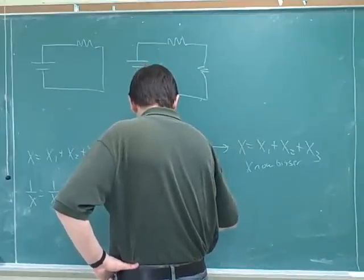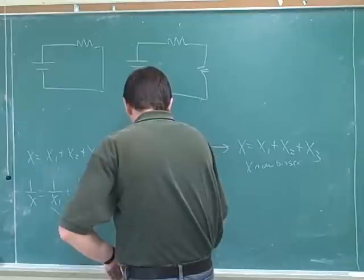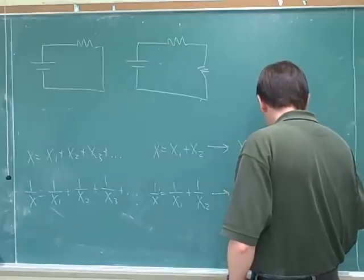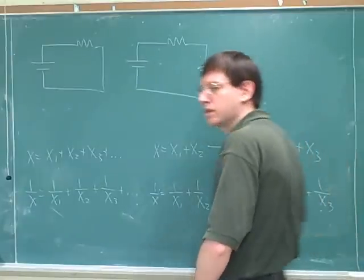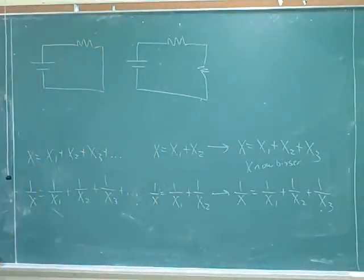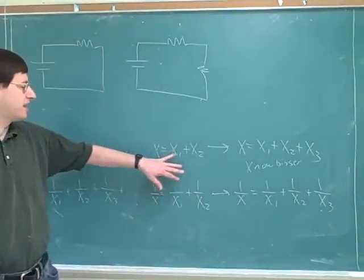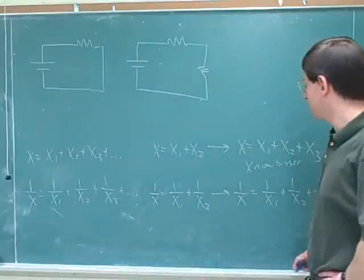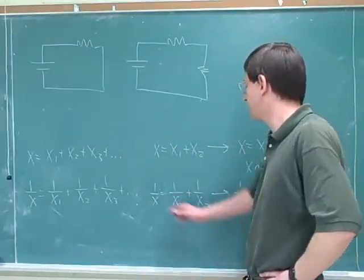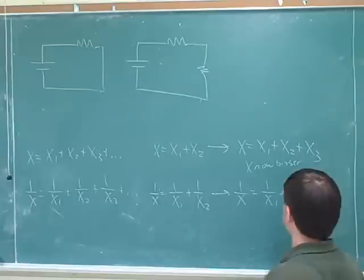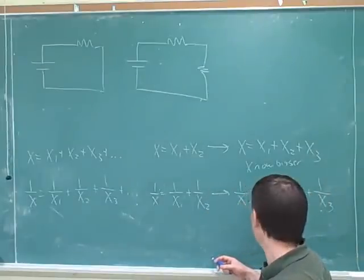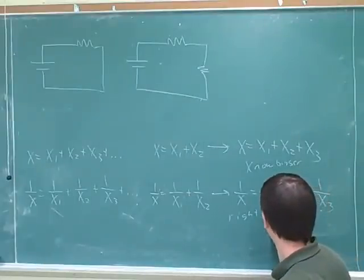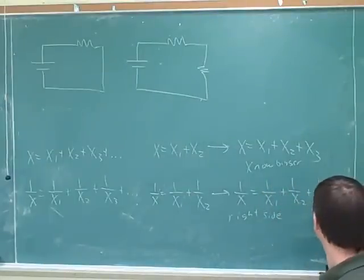Now here's a more complicated case. Here we have an equation where x does not equal the sum of the sub-x's — the reciprocals are based on the sum. Let's say we start with two devices and add a third. Let's figure out whether that's going to make x bigger or smaller. When we add x3, assuming everything is positive, is that going to make the right-hand side bigger or smaller? Does adding this new positive term...